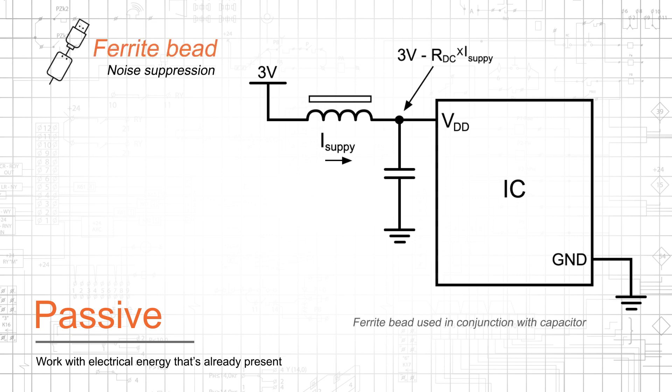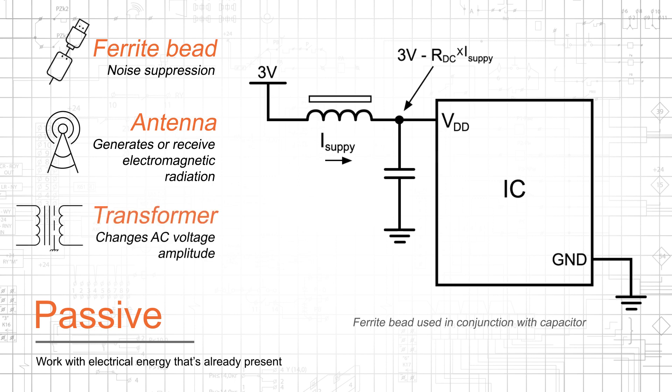Other passives include ferrite beads, which are used for noise suppression, antennas, which efficiently generate or receive electromagnetic radiation, and transformers, which use closely spaced inductors to change the amplitude of an AC voltage.